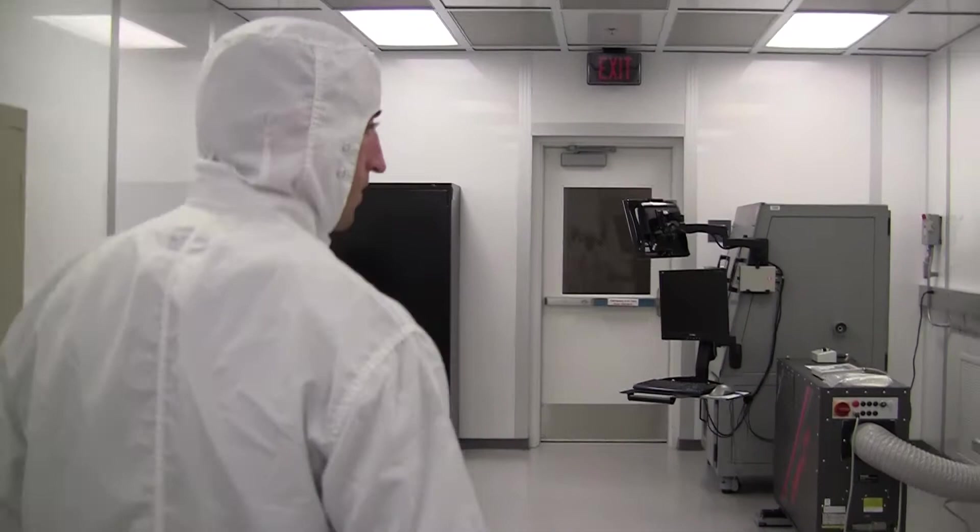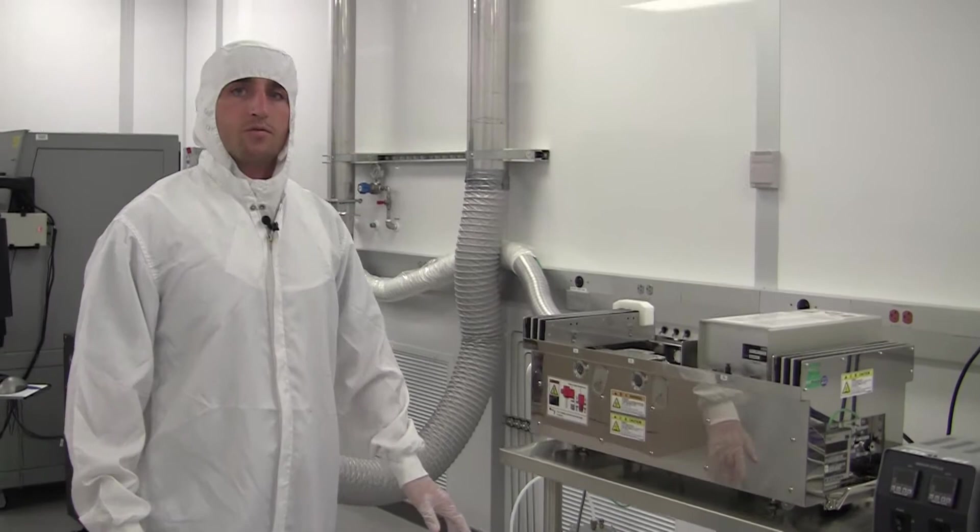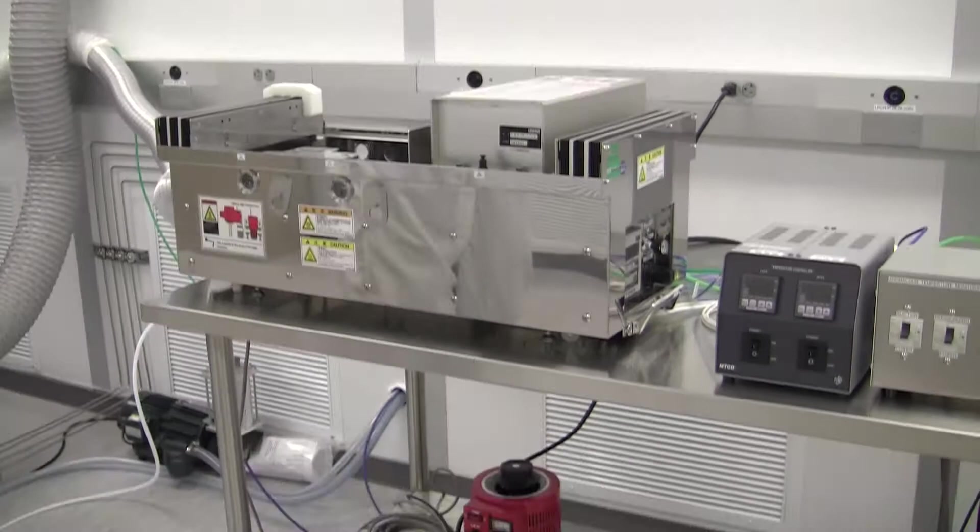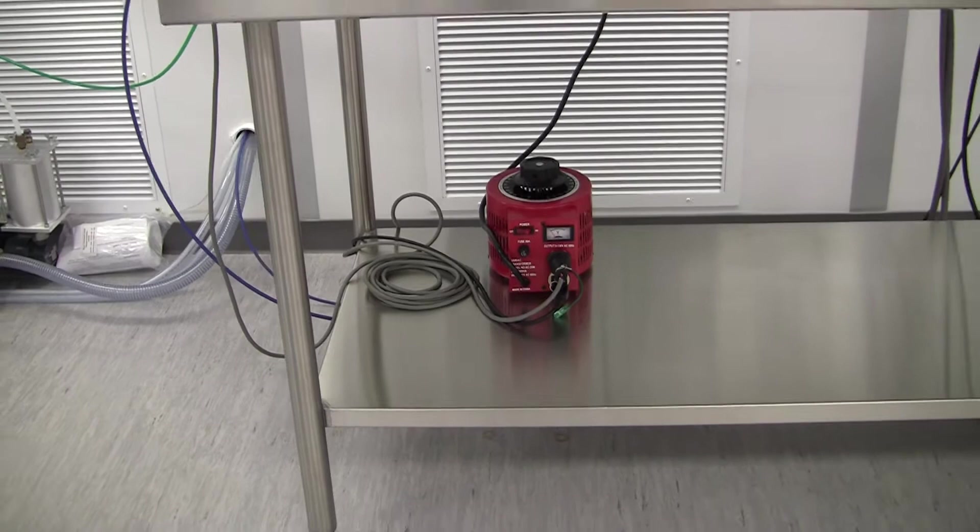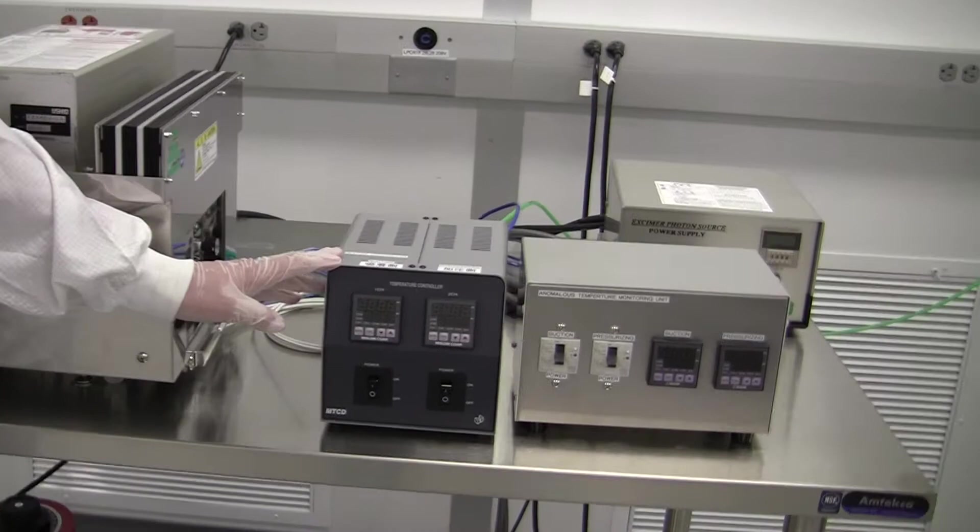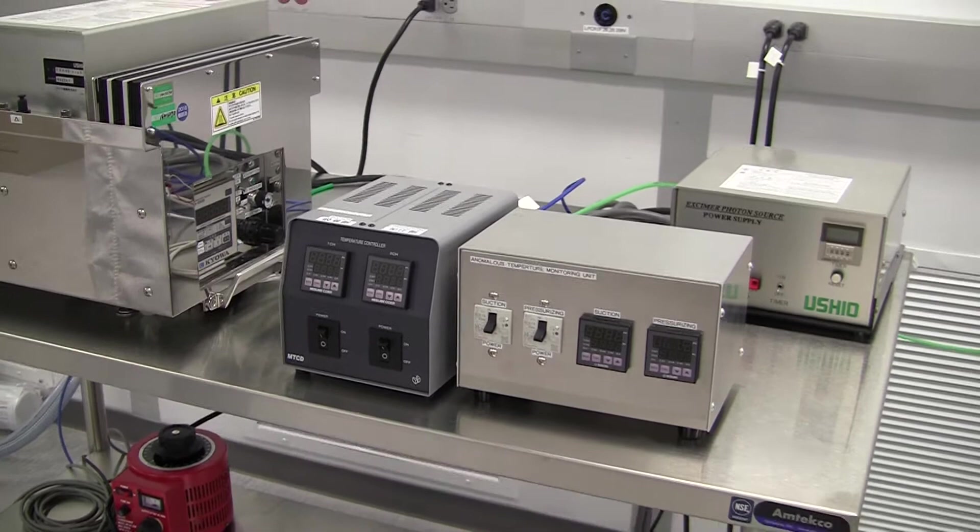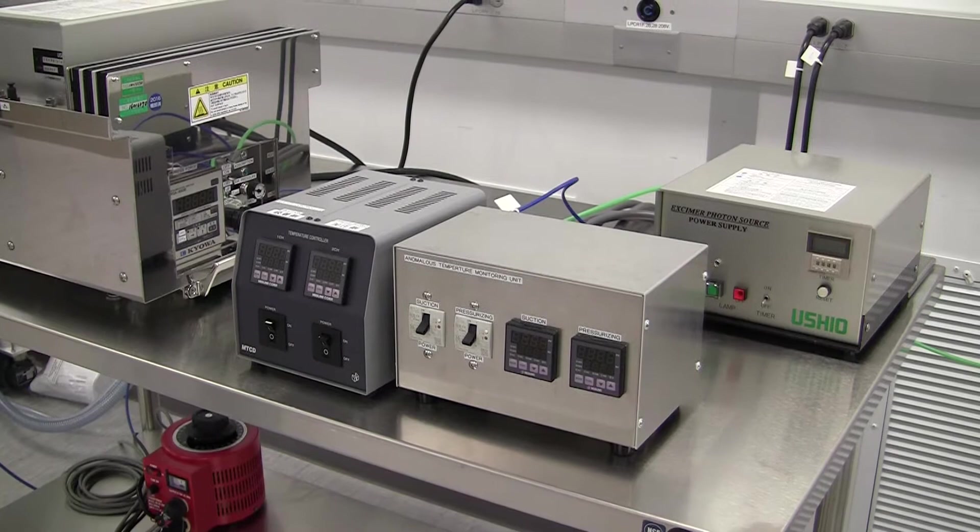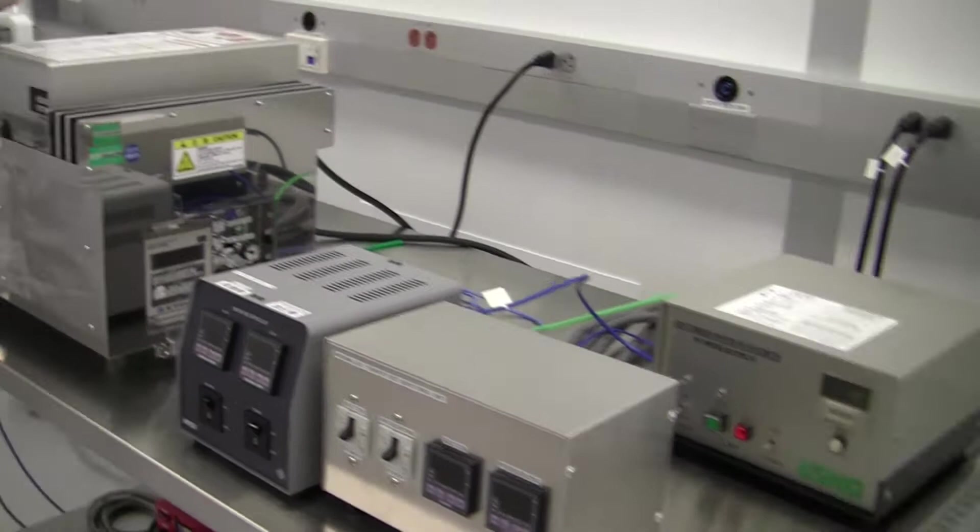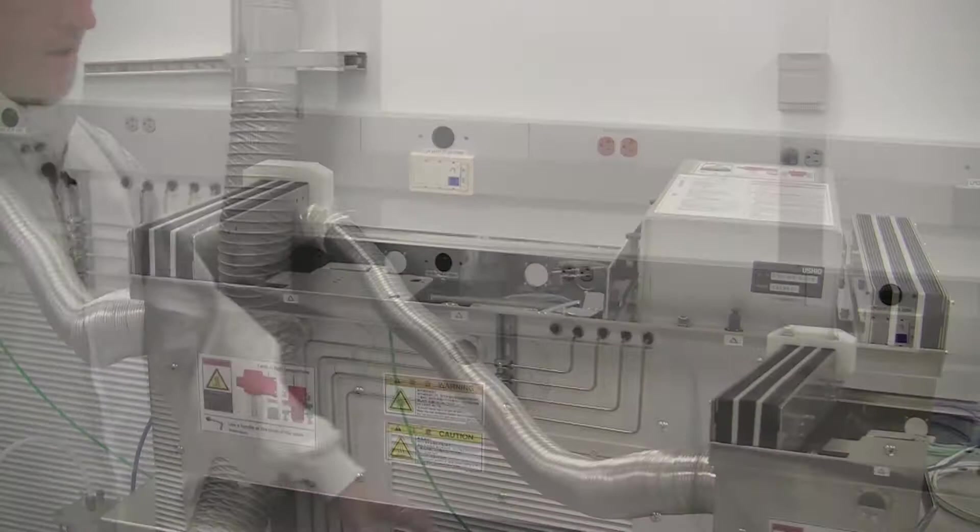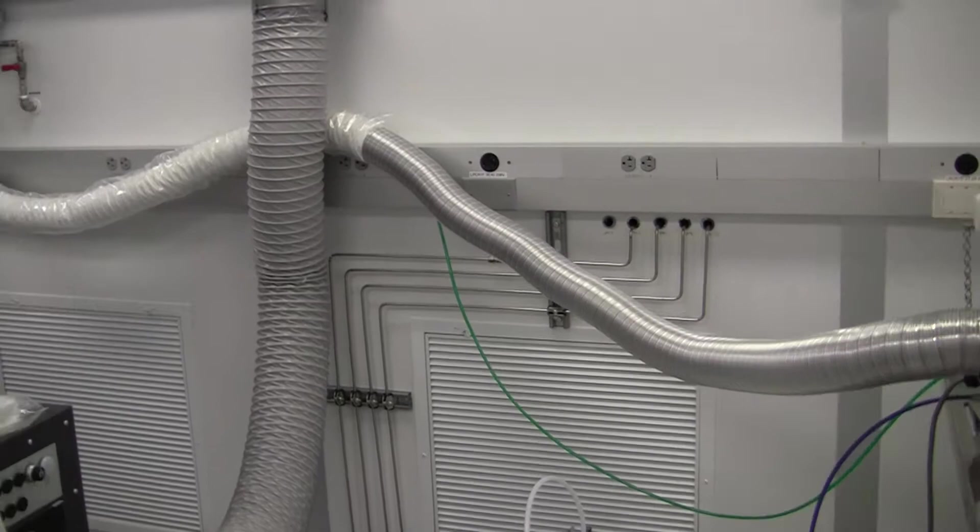Everything in this region here is part of the USHIO photobonding system. We have two layers to the table. The main bonding unit is this unit here. It is powered and a lot of components here are powered by the RED transformer under the photobonding unit. We have a temperature controller as well as an anomalous temperature monitoring unit. These will be used to control the temperature if desired any different from room temperature for your substrates. Next to that we have the eczema photon source power supply. This is the power supply that supplies the power to the eczema photon source which is used to irradiate your substrates. Lastly the exhaust hookup is here on the left side of the unit and runs to our house exhaust.